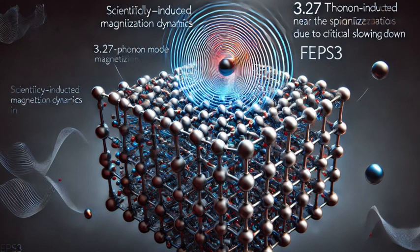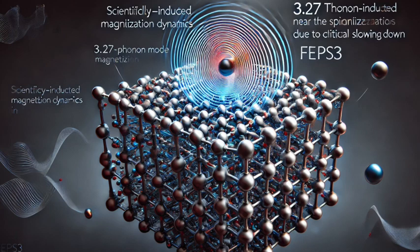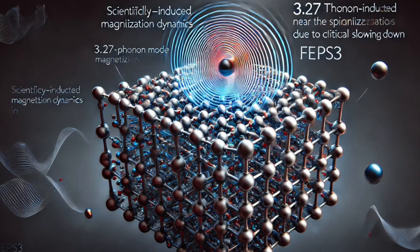We're not just talking about incremental improvements here. We're talking about a total paradigm shift in data storage. Exactly. And it's not just about speed. Because light can be focused down onto incredibly small areas, we could potentially pack way more data into a smaller space. Terahertz-induced magnetization could lead to storage devices with mind-boggling capacities. It's incredible to think that something we can't even see, this terahertz light, could unlock this whole new world of data storage possibilities.